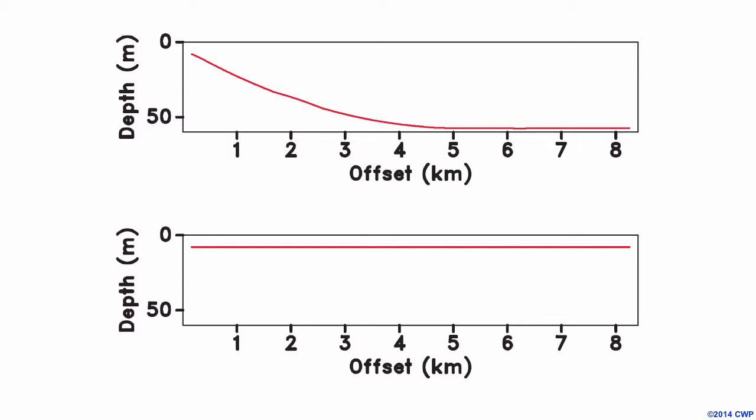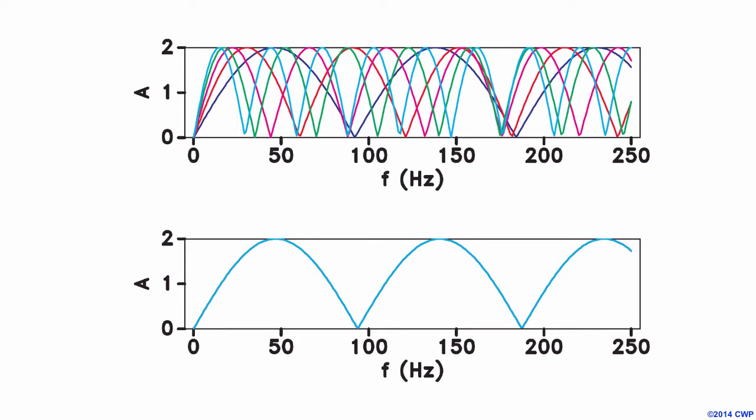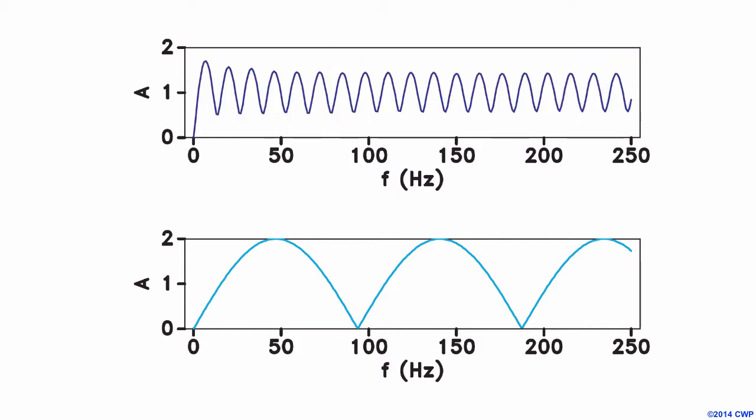The variable depth streamer cable is beneficial for inversion. The top shows the streamer for this dataset, and the bottom shows a conventional fixed-depth streamer. Propagating a vertical incident plane wave into the cable, the top panel shows the notch response for this variable-depth cable, and the bottom panel shows the notch response for the fixed-depth cable. The composite notch response for the variable depth cable gives a very low frequency response. Sadly, marine data contains swell noise, so we don't have the luxury of getting near-zero hertz information. However, our low frequency data is quite good for this dataset.